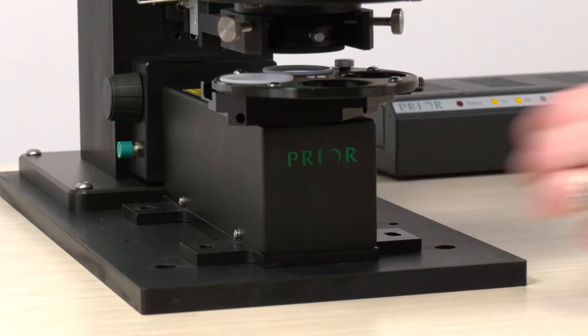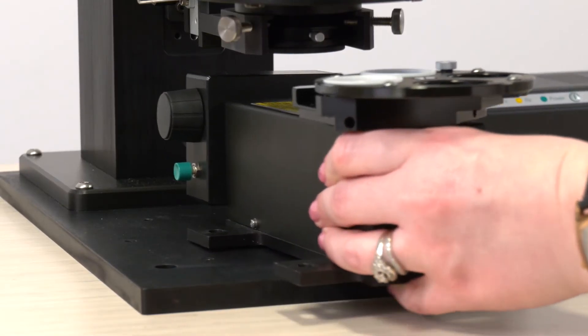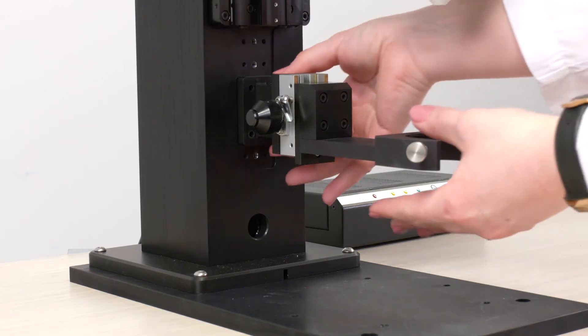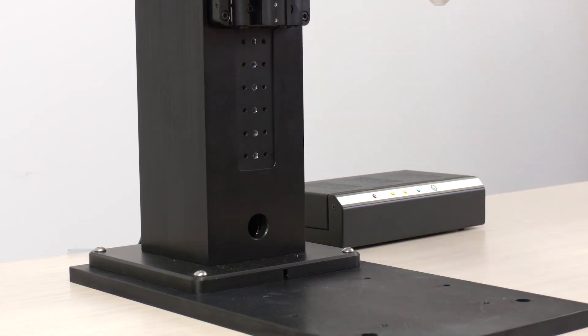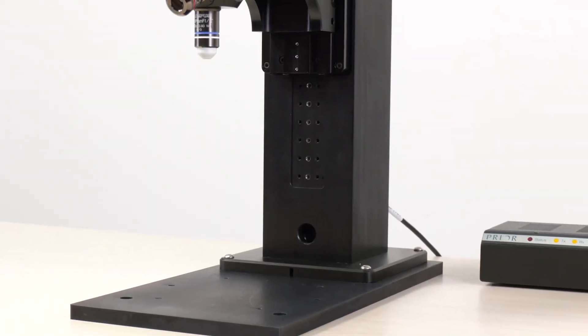Increase the area of your working space by removing the optional transmitted light module and adjustable condenser mount, making it easier to transition between small tissue samples and whole animals.